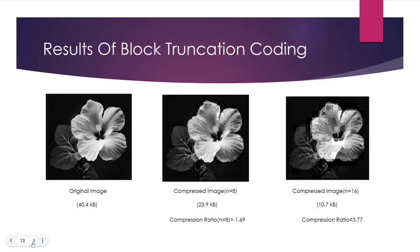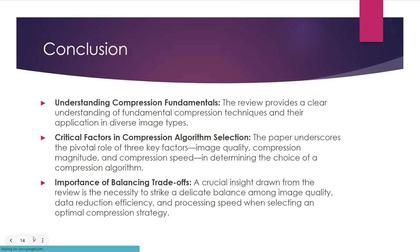The block size defines the dimension of these non-overlapping blocks. A larger block size means more pixels are considered together, providing a higher level of spatial averaging. As a result, larger block sizes often lead to more effective compression because redundancy within the block is exploited more efficiently. However, the choice of block size involves a trade-off — while larger block sizes generally result in higher compression ratios, they may lead to loss of fine image details. Smaller block sizes preserve more local detail but might not achieve as high a compression ratio.